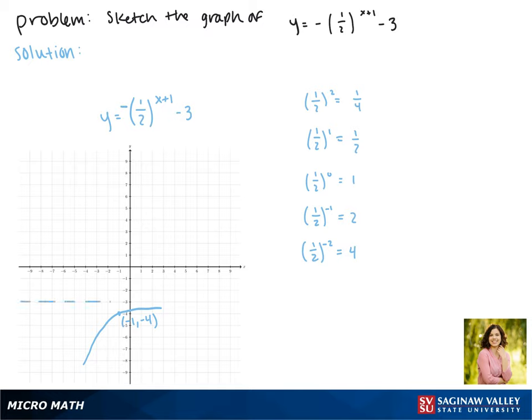Notice that the asymptote shifted down along with our function, so that it's the line y = -3. This is the graph of our function.